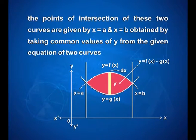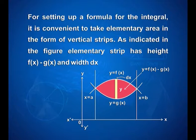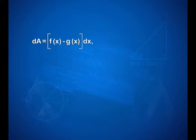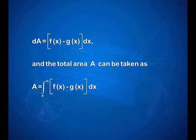The points of intersection of these two curves are given by x is equal to a and x is equal to b, obtained by taking common values of y from the given equations of the two curves. For setting up a formula for the integral, it is convenient to take the elementary area in the form of vertical strips. The elementary strip has height f(x) minus g(x) and width dx, so that the elementary area dA is equal to [f(x) minus g(x)] dx, and the total area A is equal to integral a to b of [f(x) minus g(x)] dx.